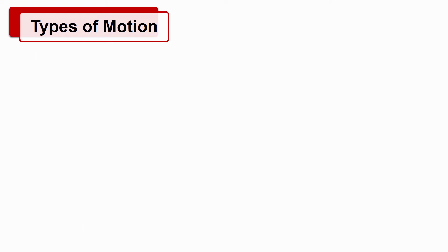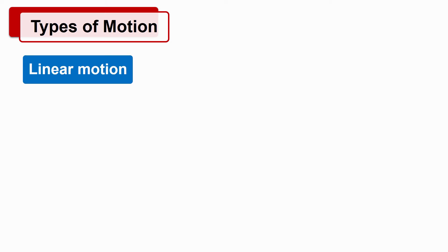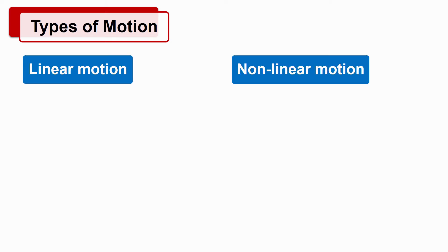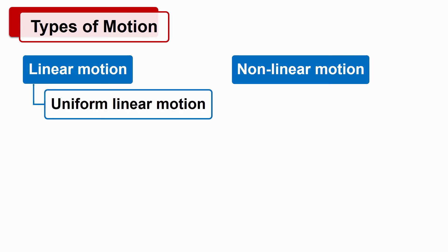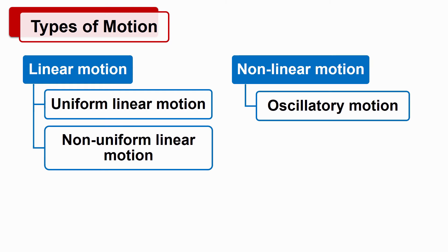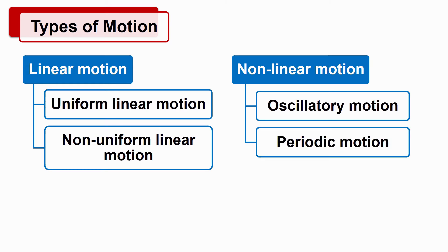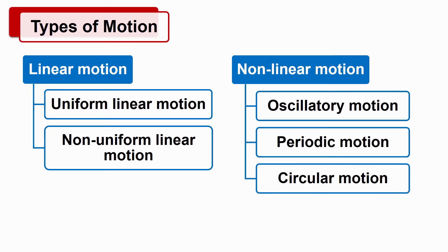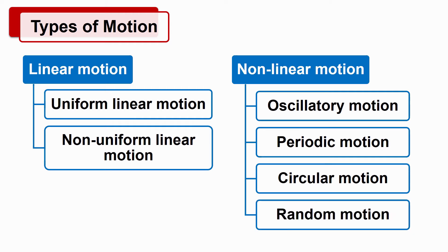Now we will see the types of motion. There are two basic types of motion: linear motion and non-linear motion. Linear motion is classified into two types: uniform linear motion and non-uniform linear motion. Non-linear motion is classified into oscillatory motion, periodic motion, circular motion, and random motion. Let's see these types of motion one by one.